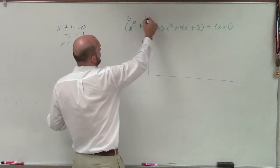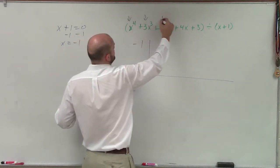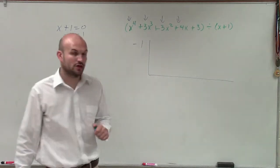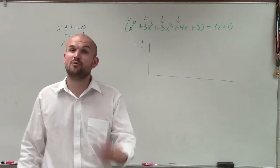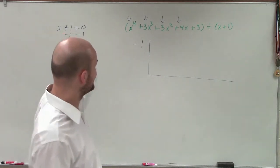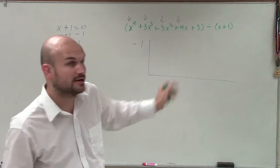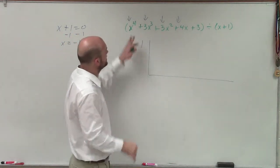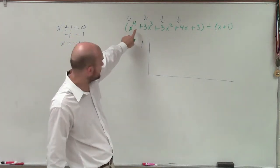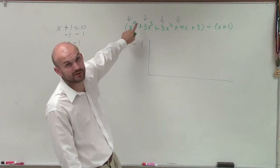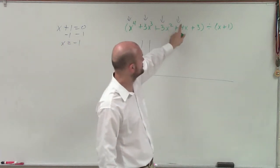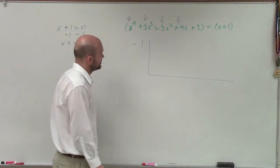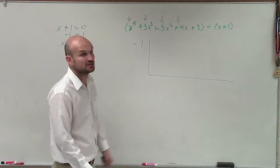Now I'm going to take the coefficient of each one of my terms from my dividend polynomial. It's very important that our polynomial is in descending order. If we're missing a term, we replace it with 0. Here I have my leading term with a degree of 4, and I can go 4, 3, 2, 1, and x to the 0 — so I'm in good shape.